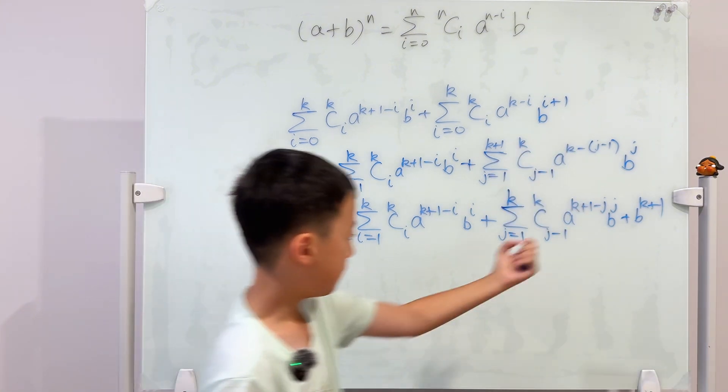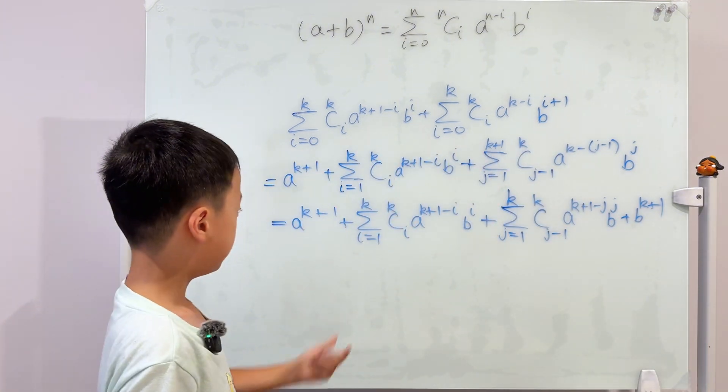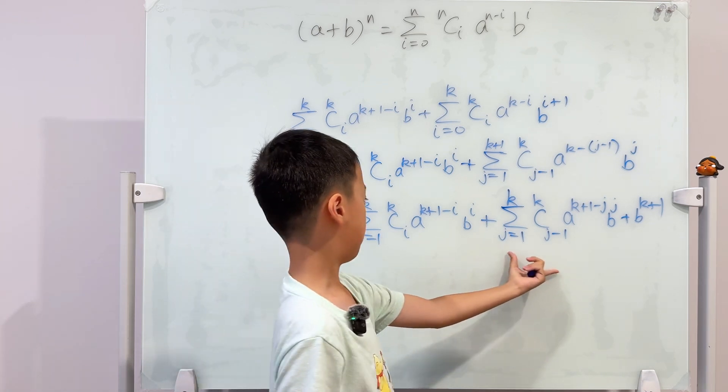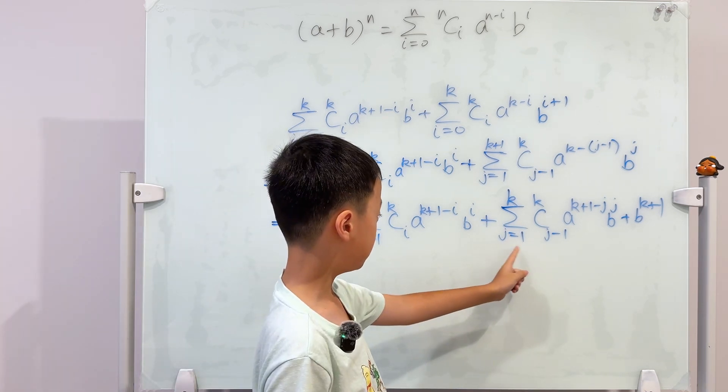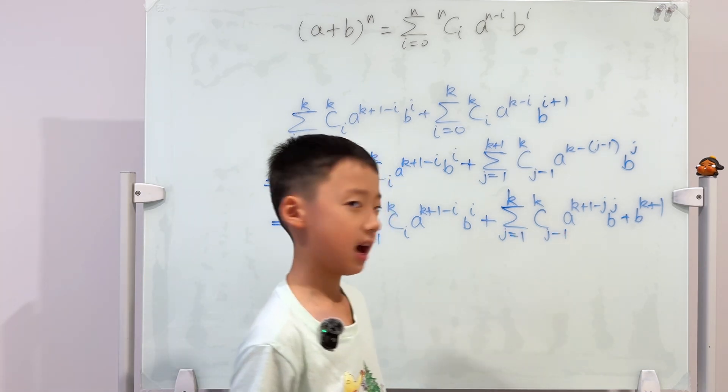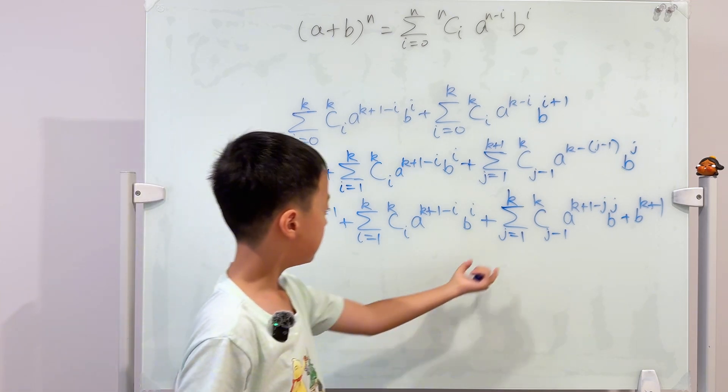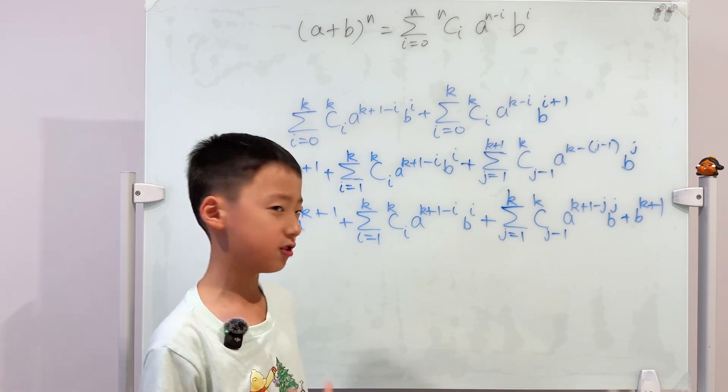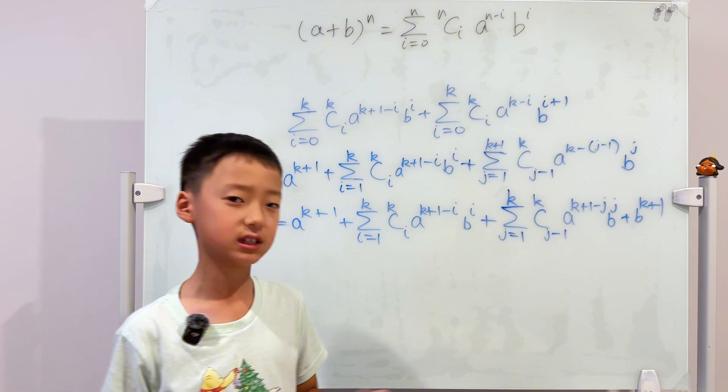We have the first term here and the last term there. Then now we just need to deal with the middle terms. I'm going to change this j back into i because it doesn't really matter. It's just a variable. You can easily change it to any variable. I can change it to x if you want me to.